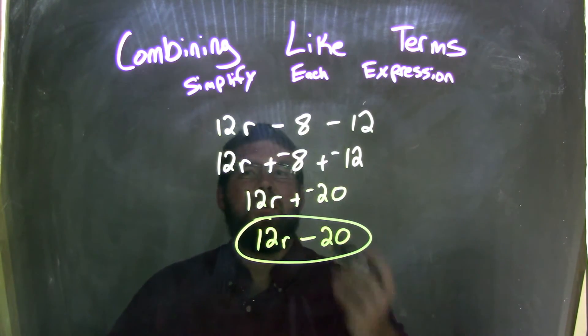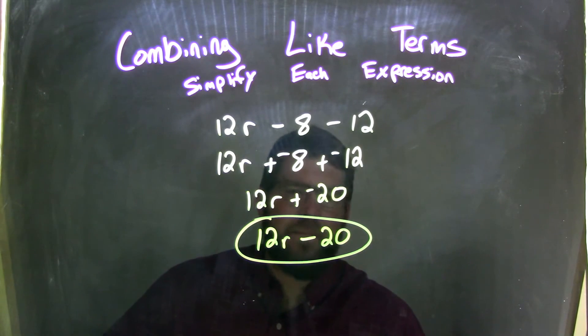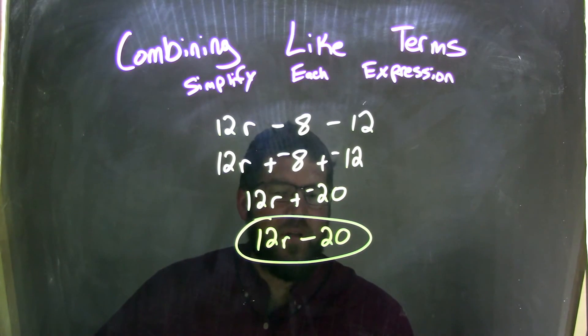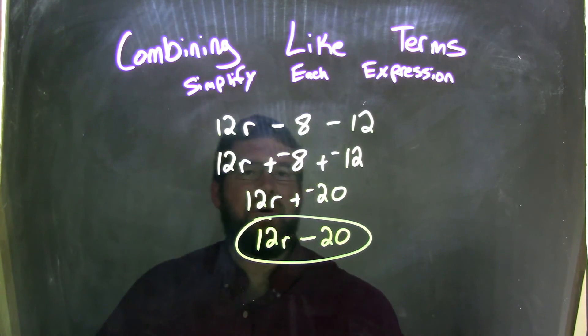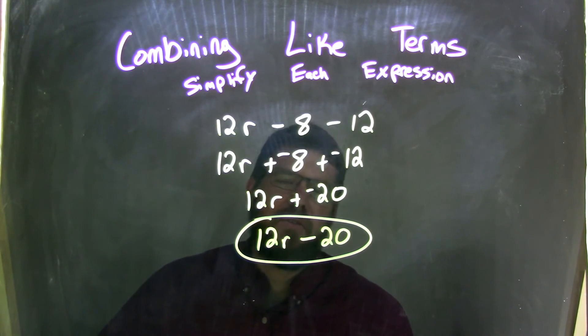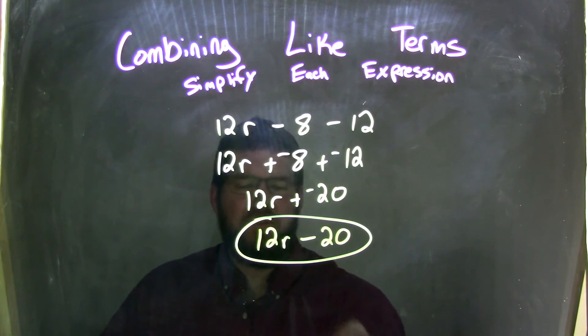So, let's recap. We started with 12R minus 8 minus 12. We can only combine our like terms. 12R is basically by itself the whole way. We took our subtraction and converted them to adding a negative. By doing that, it helped us easier to see the negative 8 plus a negative 12. Combining those two comes out to be negative 20. So, now we have 12R plus a negative 20. Well, adding a negative is the same thing as subtraction. So, 12R minus 20 is our final answer.